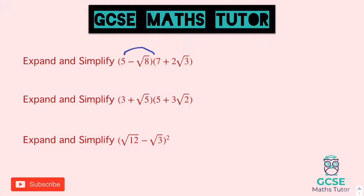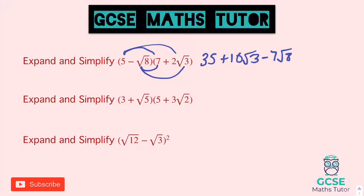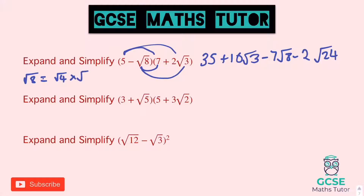So the first one: 5 times 7 is 35. 5 times 2 root 3 is 10 root 3. Negative root 8 times 7 is negative 7 root 8. And negative root 8 times 2 root 3 — one in front of root 8, so 2 — giving negative 2 root 24. We've got quite a lot going on: 35 stays at 35, 10 root 3 doesn't simplify, but 7 root 8 does. Root 8 simplifies to root 4 times root 2, which is 2 root 2.